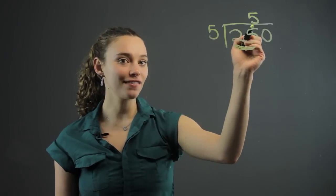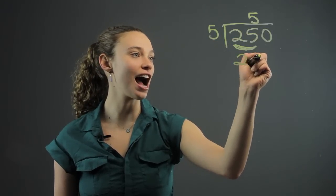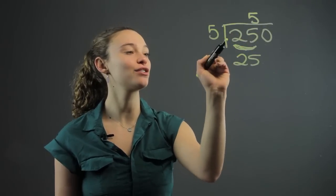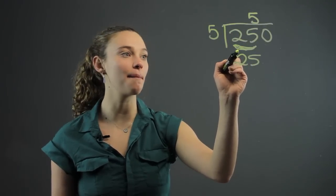Then we multiply. 5 times 5 is 25. And make sure you line up that number that you multiplied to get directly below this number.